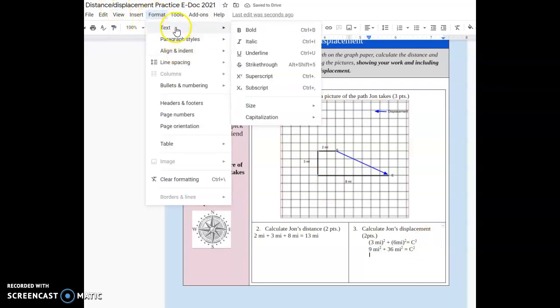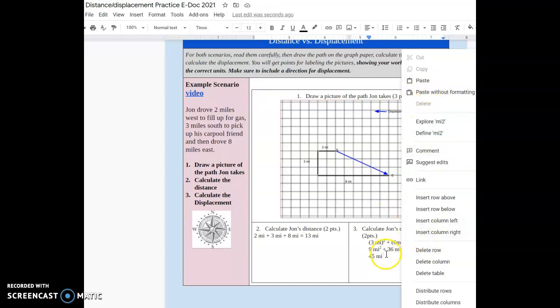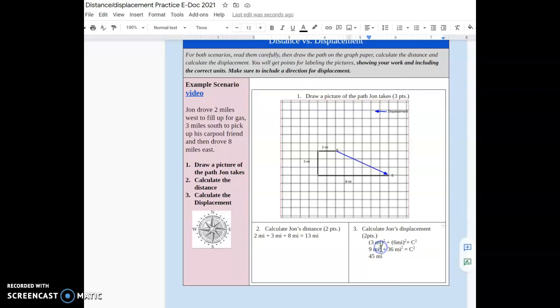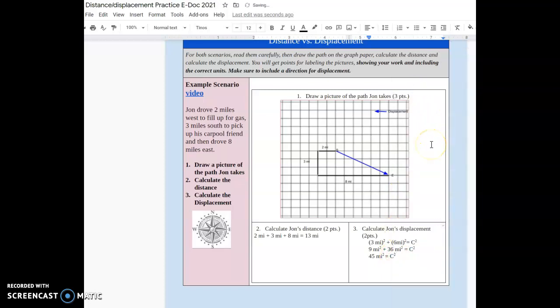So now what is nine plus 36? Nine plus 36 is 45. So I have 45 miles squared. I'm just going to copy this little square right here. So that way it's faster. Copy. Paste. This is equal to, and I notice my thing is still a little small, c². So to get c, which is our displacement, we need to take the square root of both sides.